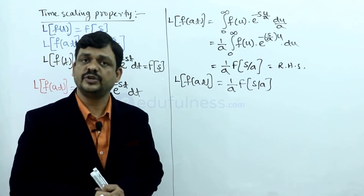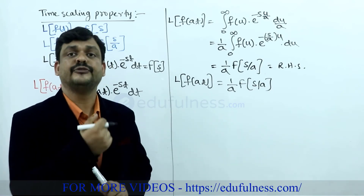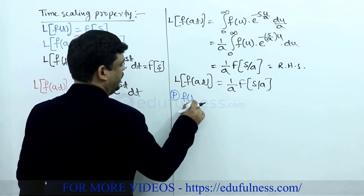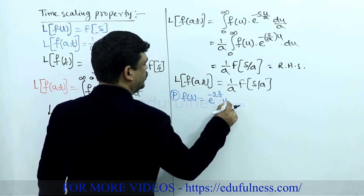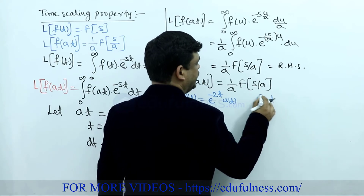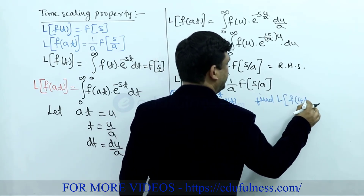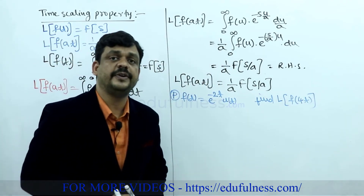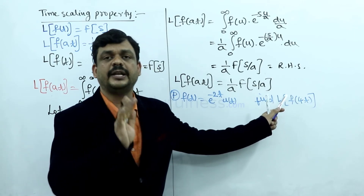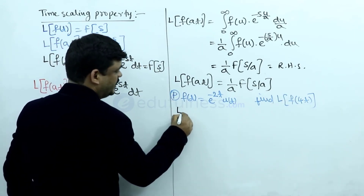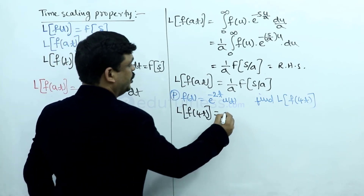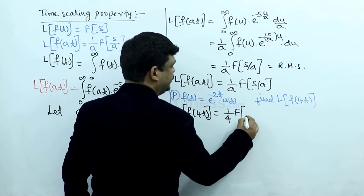Now I am taking one example. A function is defined as f(t) = e^(−2t) · u(t). Find the Laplace transform of f(4t). Here the time domain function multiplies with 4. Applying the time scaling property: Laplace transform of f(4t) is (1/4) · F(s/4).